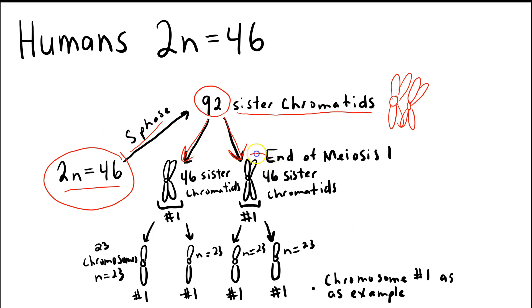So at the end of meiosis I, you would have two daughter cells with 46 sister chromatids that will eventually get separated. So we've separated there in the first round of meiosis, the homologous chromosomes. We've broken up the tetrad of sister chromatids.